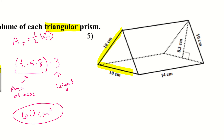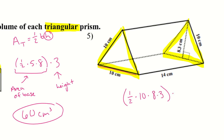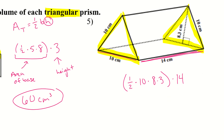Let's try number five. The triangle is the base even though it's on its side — we look for the two parallel faces, which are the triangles, as our base. Area of the triangle: one-half times 10 times 8.3, then multiplied by the prism height of 14. Plugging into the calculator gives 581 centimeters cubed.